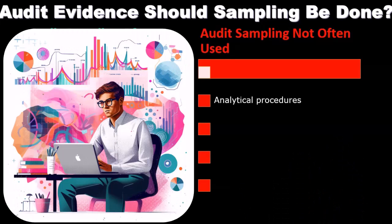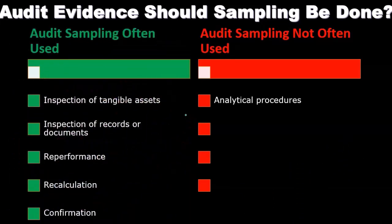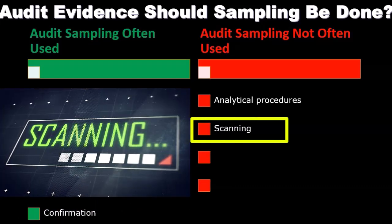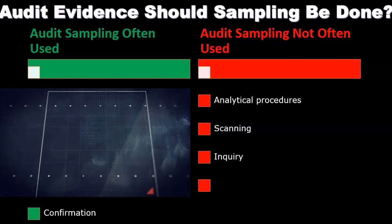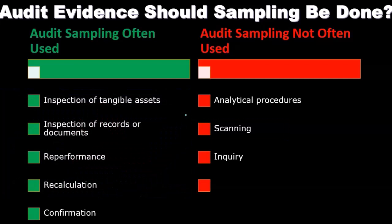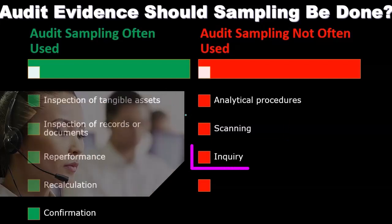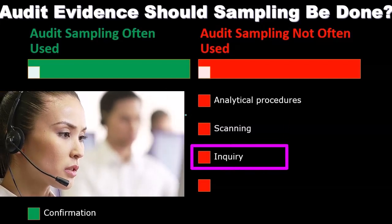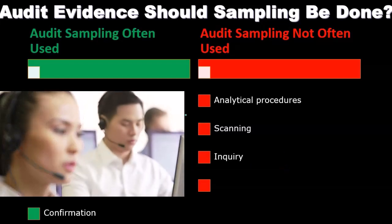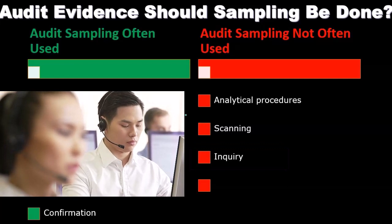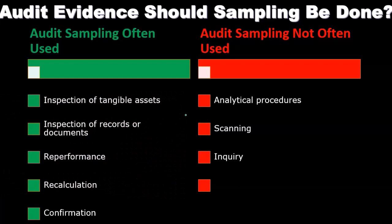We're not usually picking just some type of sample to test — we're basically testing the relation of the numbers on the financials and related documentation. Scanning is a similar type of process, so we don't typically have a sampling method for scanning. For inquiry, if we're going to do an inquiry process and have questions about some type of assertion, we're not going to randomly sample who we're going to inquire. We'll determine what we want to know, who the best person to talk to is, and then inquire that particular person.